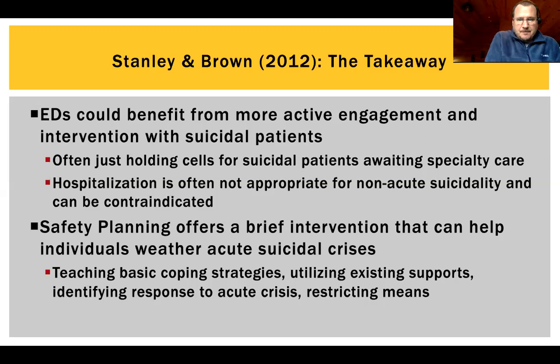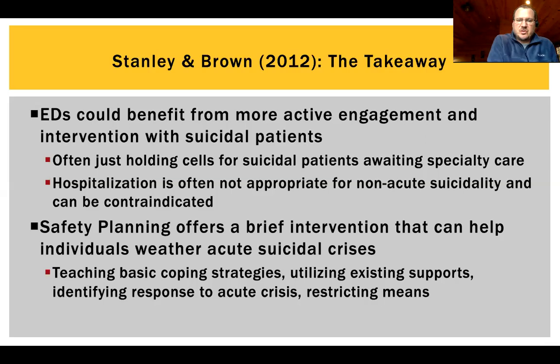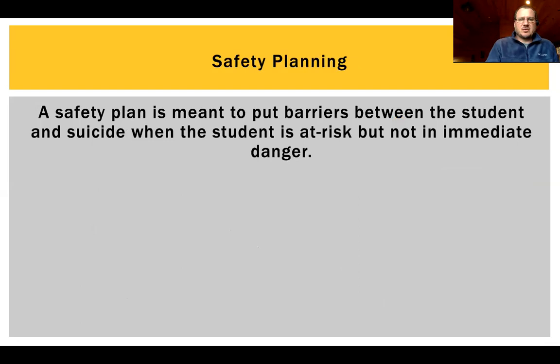What safety planning really tries to do is not cure suicidality, but it helps individuals weather those acute crises. There are six steps, but basically you're teaching them coping strategies, helping them think about supports they can utilize, what to do in an acute crisis, and also reducing access to means. This is for when someone is at risk but not in immediate danger — it is not meant to replace hospitalization, although sometimes it's used that way.